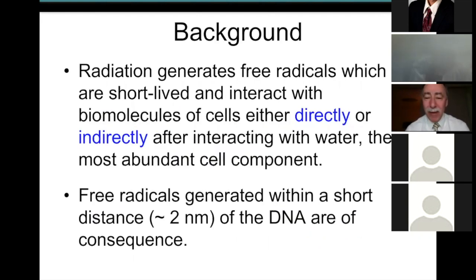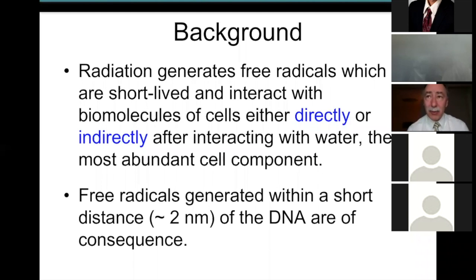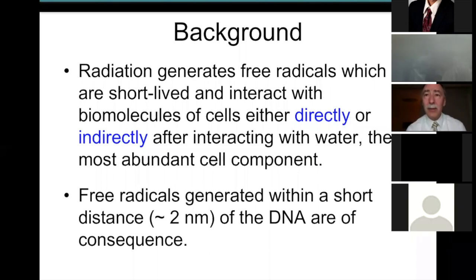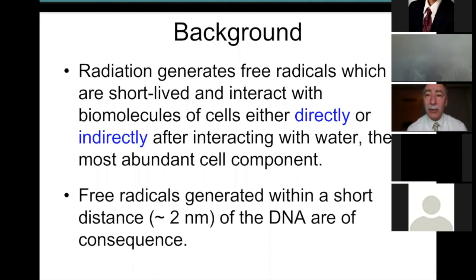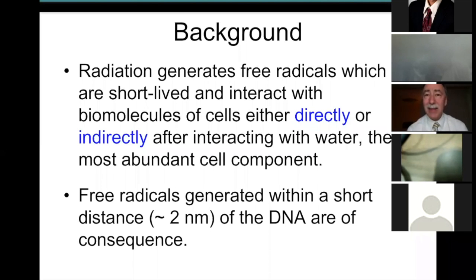By way of background: radiation generates free radicals, which are short-lived moieties that interact either directly with the matter they damage or indirectly through water. Water is the most abundant component of the cell. When free radicals form close to DNA, that's when the consequential damage occurs.